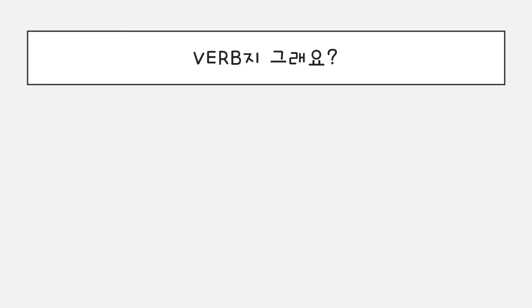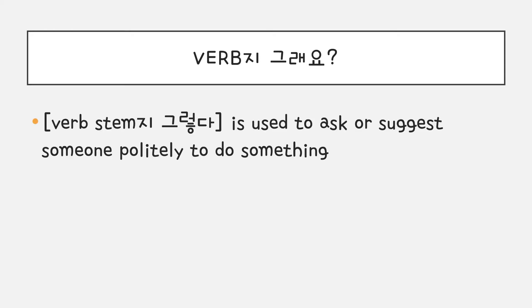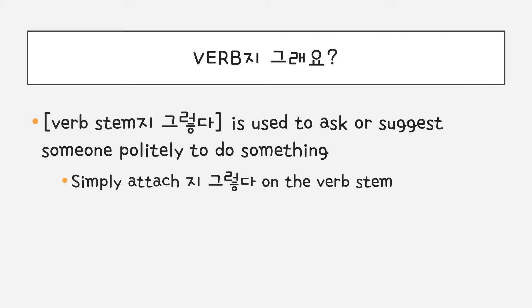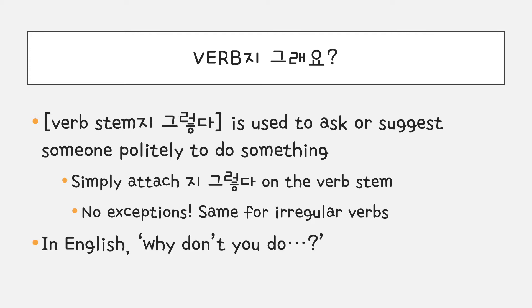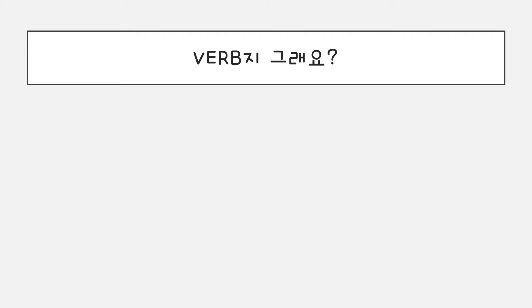Now let's look at the grammar 지 그래요. 지 그렇다 is used to ask or suggest someone politely to do something. You simply attach 지 그렇다 to the verb stem — no exceptions. It's the same for irregular verbs as well. In English, it means 'why don't you do this?' Now let's see some different sentence endings.